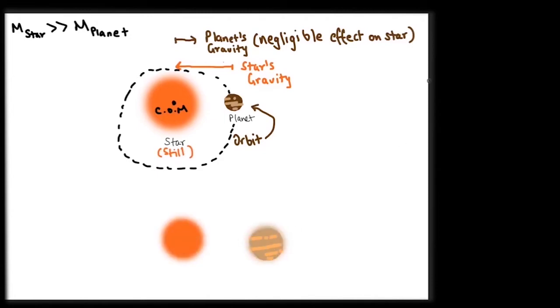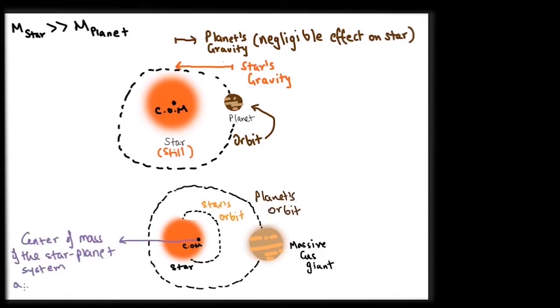But in the presence of massive gas giants, the star does show a detectable response to the gravitational pull. The star and the massive planet actually orbit around each other. They orbit around a point called the barycenter which is the common center of mass. Since stars are usually very massive, the barycenter isn't far enough out the surface and in most cases inside the star itself but shifted from its center.